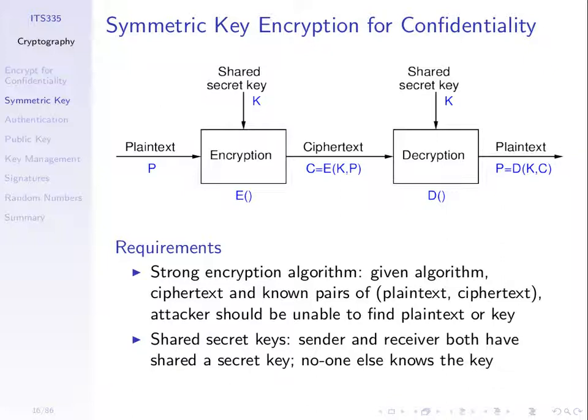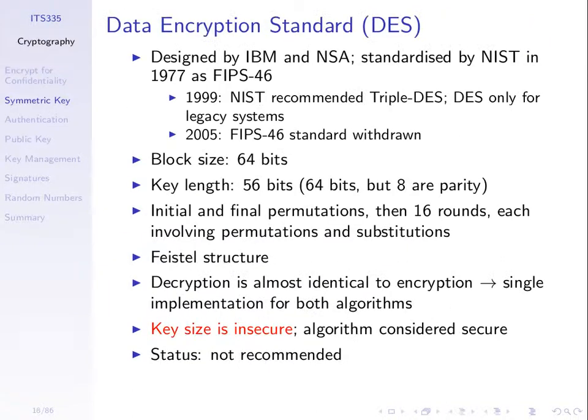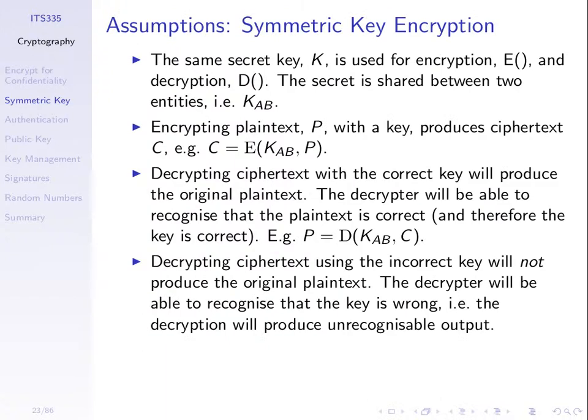We arrived at a set of assumptions after going through a few examples. Using the notation, we encrypt using one key — if it's shared between A and B, we get ciphertext. When we decrypt using the same key, we assume we'll get the original plaintext. Similarly, if we decrypt using the incorrect key, we assume we'll get the wrong plaintext, and it will be recognizable to the person decrypting that it's wrong.